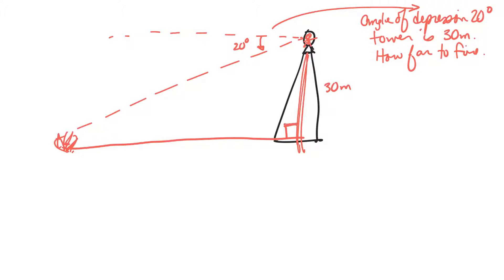Okay, so I'm assuming that it's a right angle here. This angle of 20 degrees isn't part of my triangle. But one thing I know is that the angle of depression from the tower is the same as the angle of elevation from the fire. And this angle here is part of my triangle. So I can make this 20 degrees.